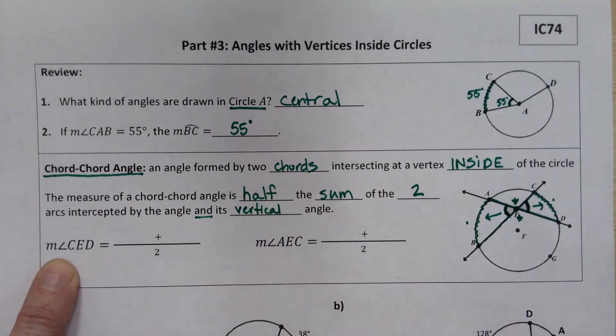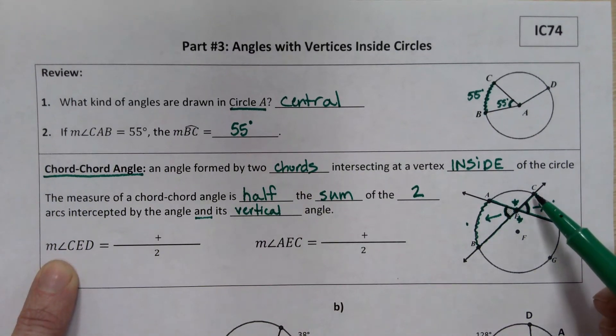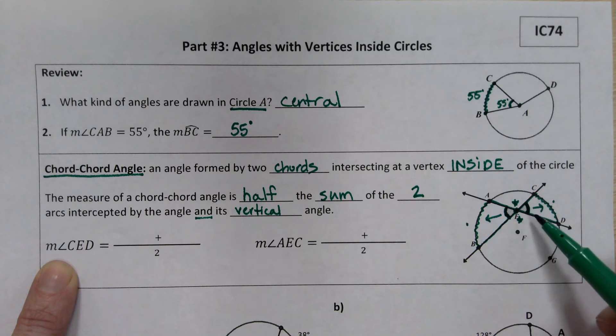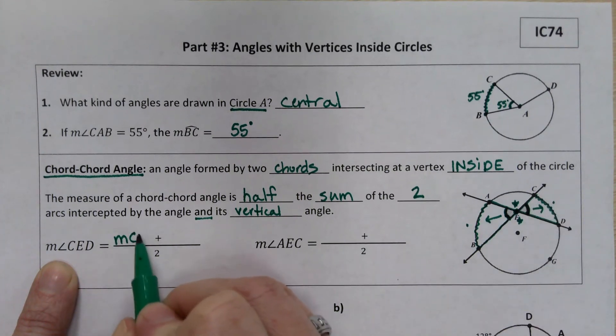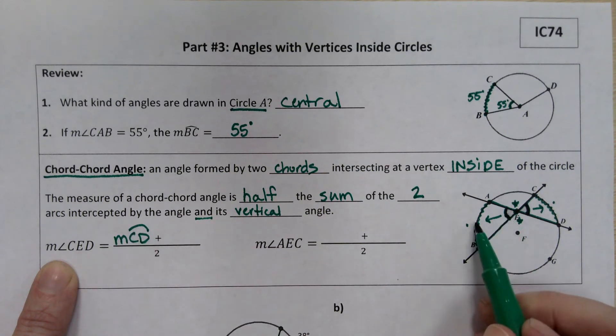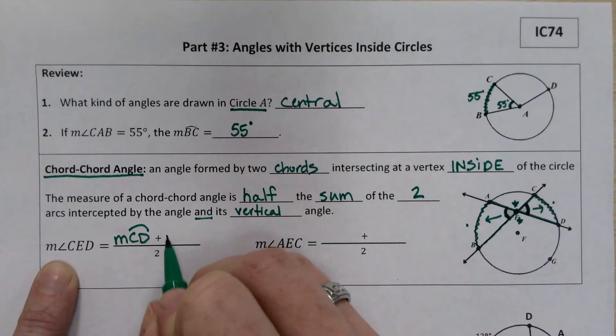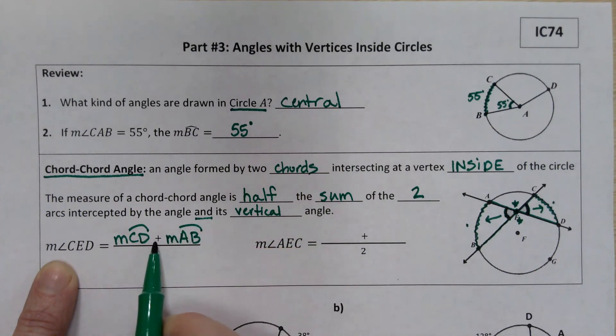So if we're looking specifically for the measure of angle CED, that's this one over here on the right side, we would take its intercepted arc, so that would be the measure of arc CD. We would take the measure of its vertical angle's intercepted arc, the measure of arc AB. We would add those up and divide by two to average them out.